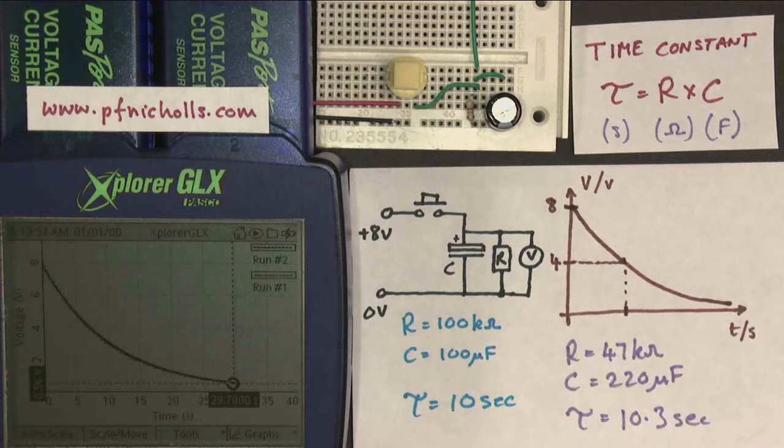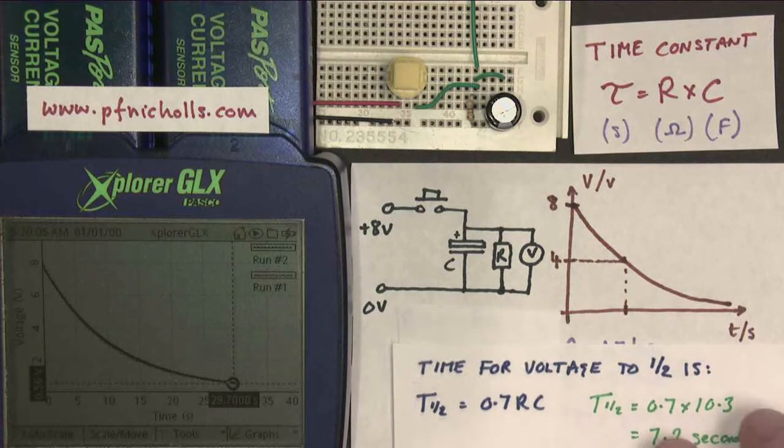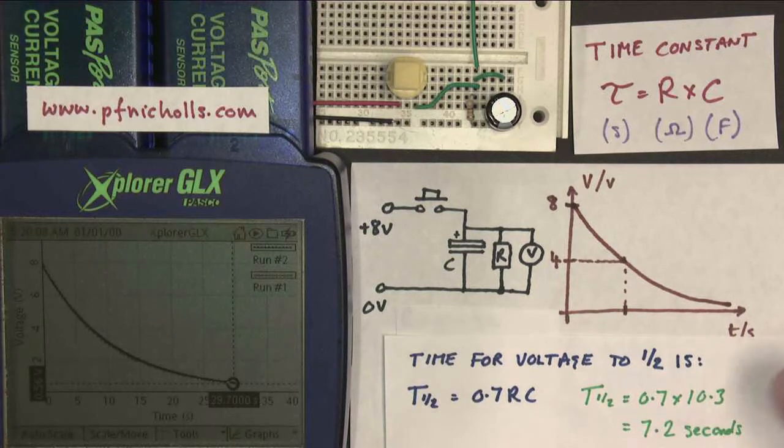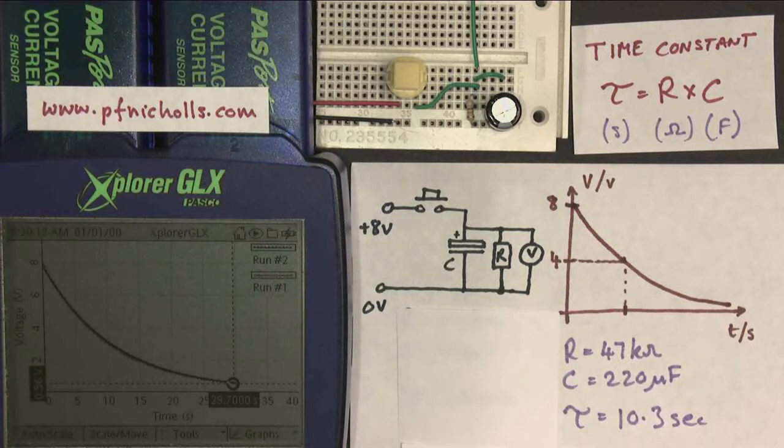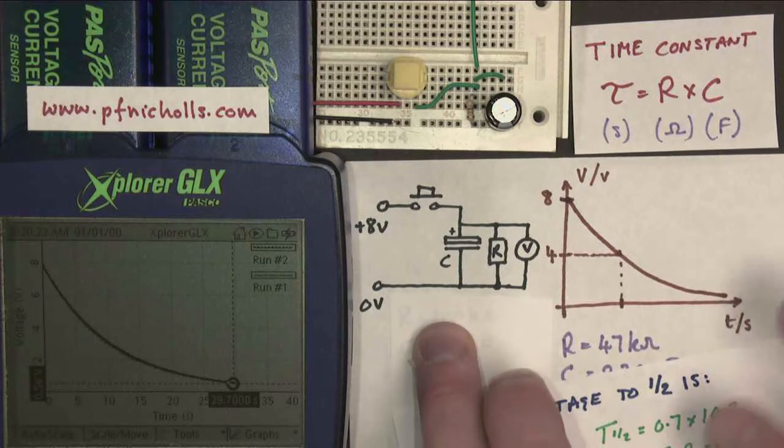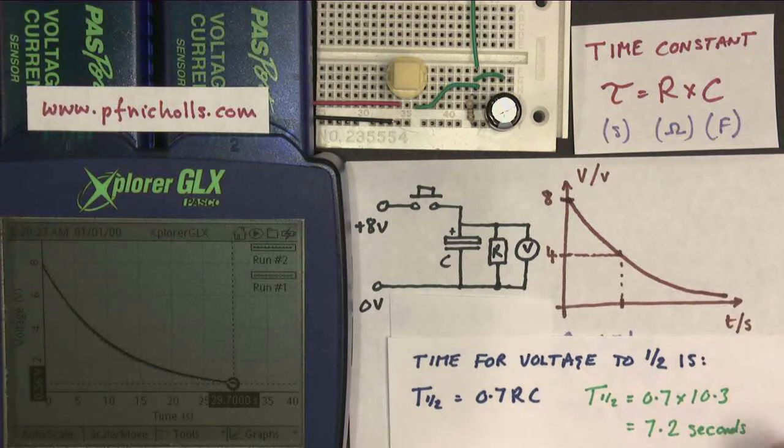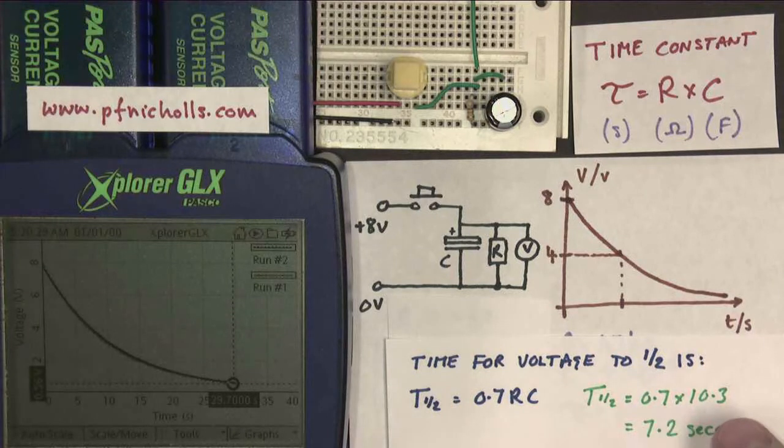Well, for that we need a new piece of theory. That the time for a voltage to halve is T half, 0.7 times RC. So if I used my previous circuit, which had a time constant of 10.3 seconds, and I do 0.7 times 10.3, I get 7.2 seconds. So let's see if that was actually the case.